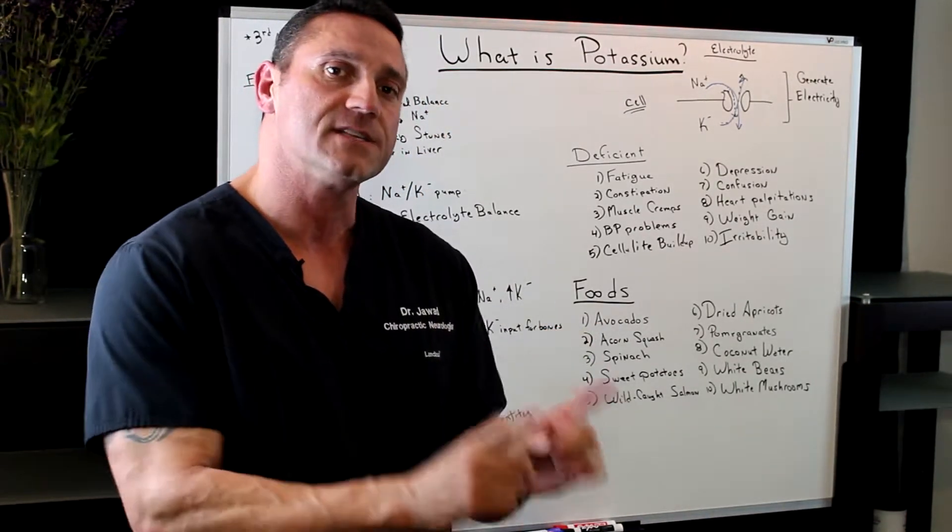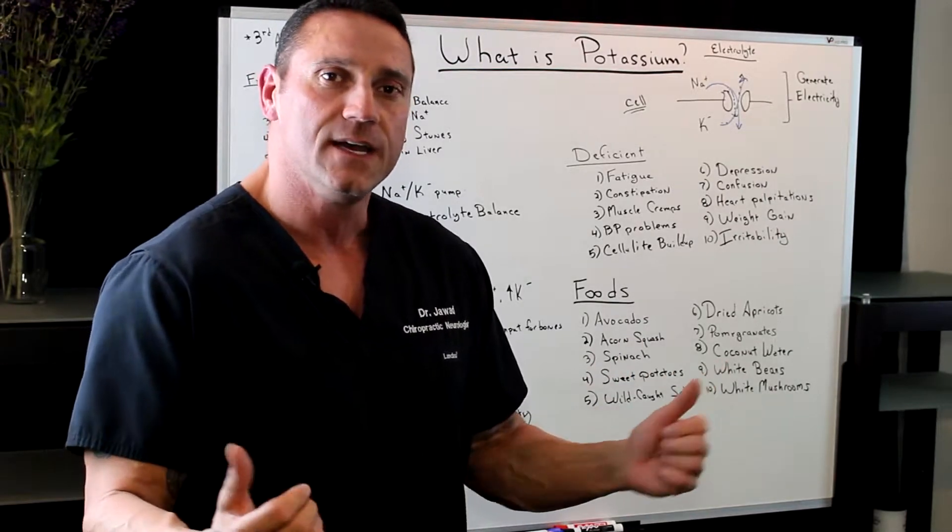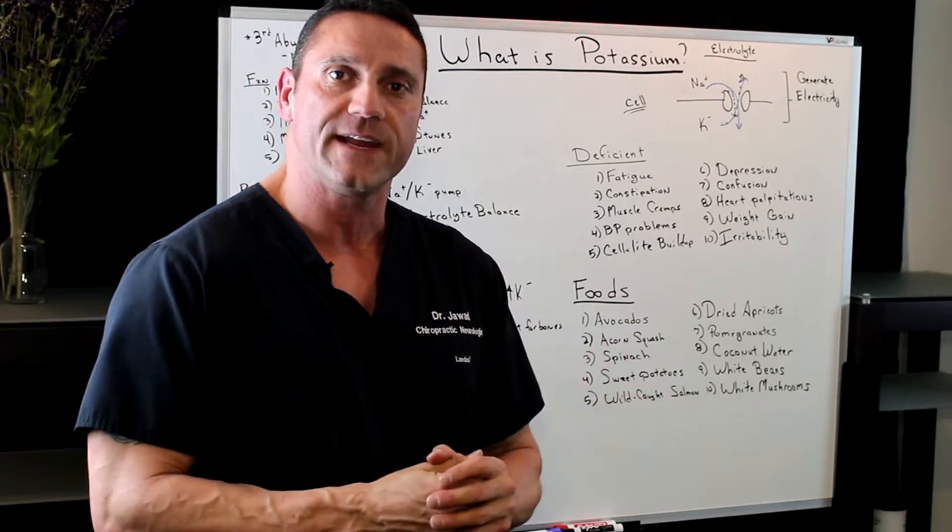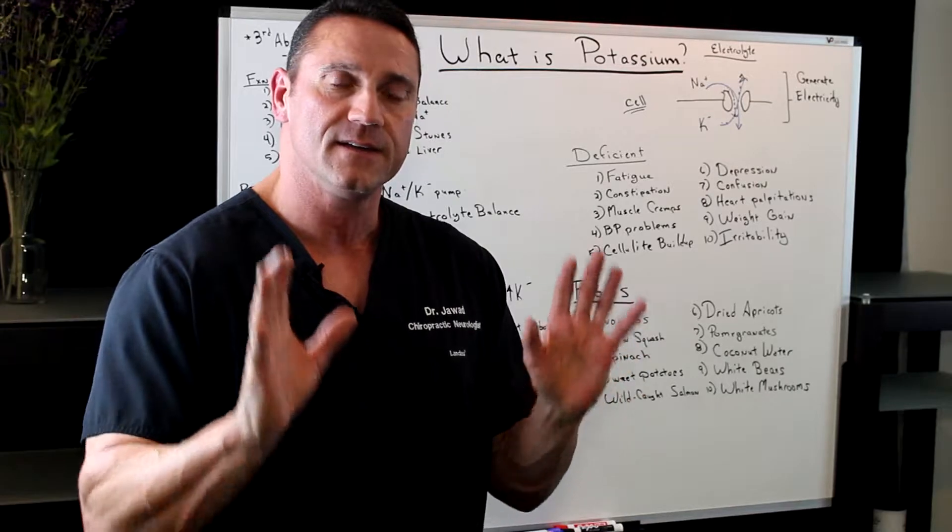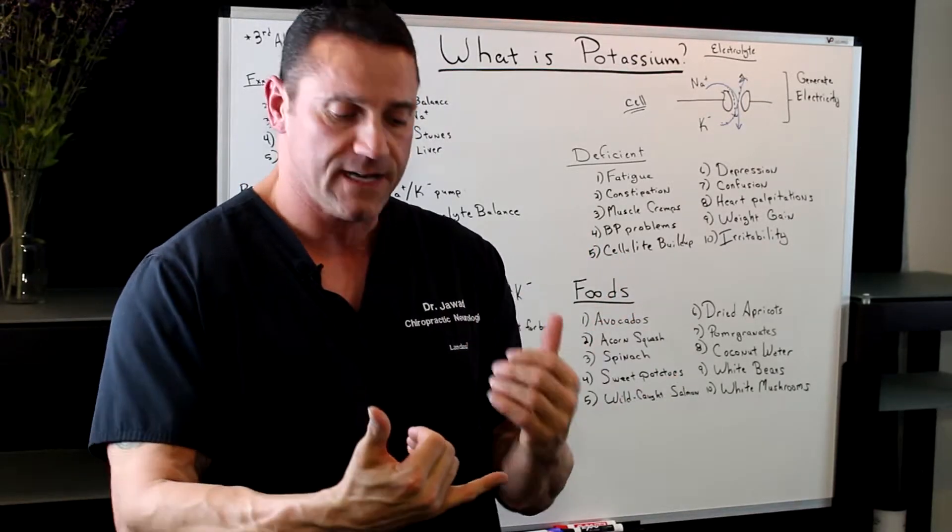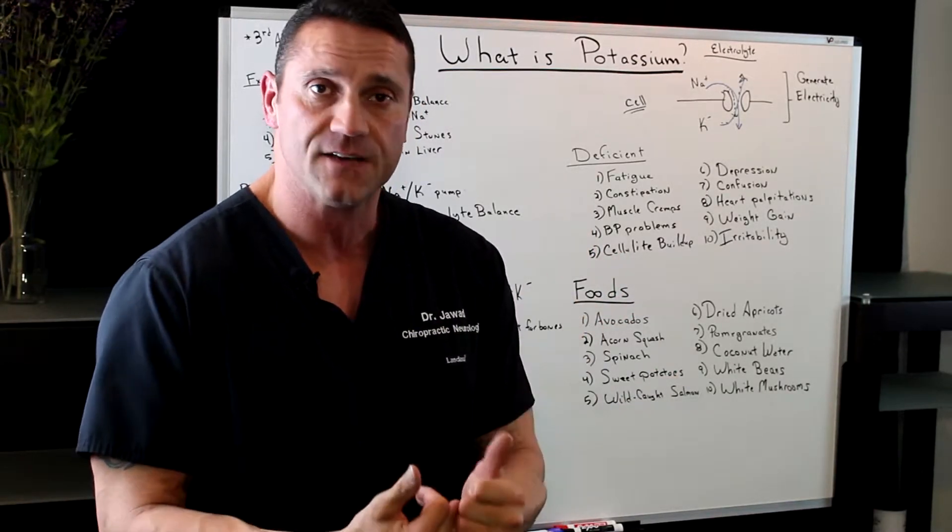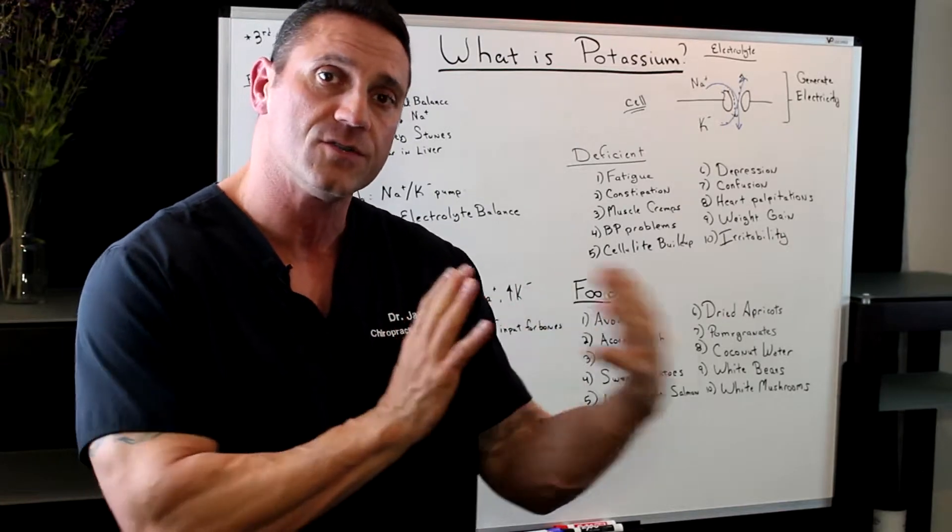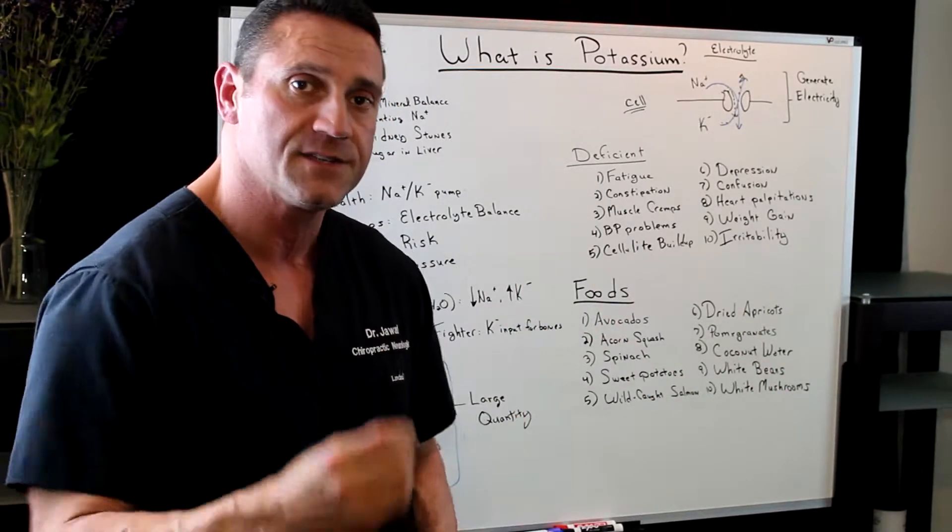Next, spinach. Spinach is loaded with potassium, but also the family of green leafy vegetables. I always recommend green leafy vegetables for the potassium, for the calciums, for the iron, for all those minerals that help stabilize the body.